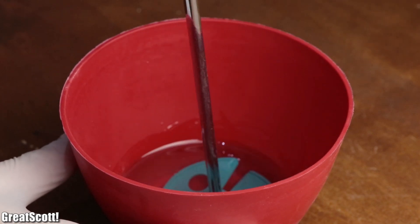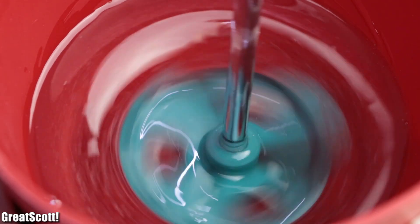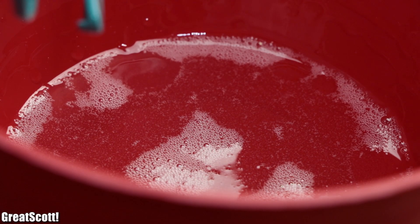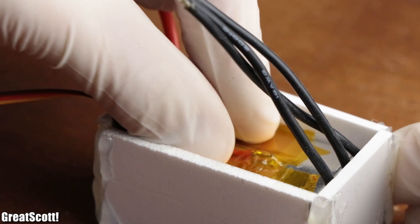After mixing the two components together for three minutes with a plastic stirrer at a speed of 450 rpm, I let it sit for around two minutes and then poured it into the second cuboid in which I positioned the ESC beforehand.